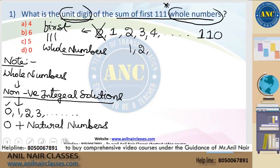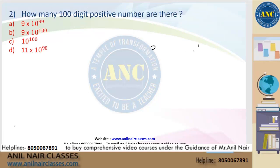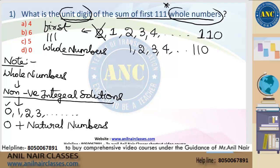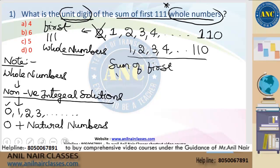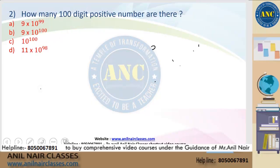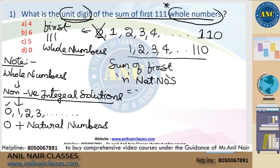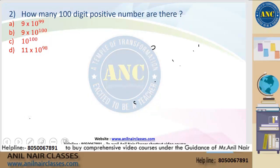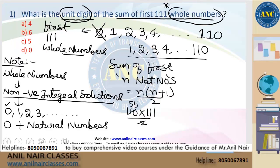So we need the sum of 1, 2, 3, 4 up to 110 — these are consecutive natural numbers. The sum of the first n natural numbers is n(n+1)/2. So we compute 110 × 111 / 2. Dividing 110 by 2 gives 55. Then 55 × 1 = 55, so the unit digit is 5.